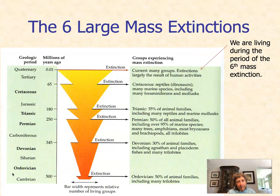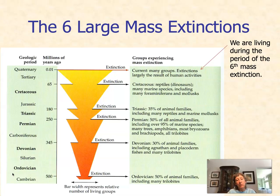This is a table showing five prior mass extinction events. I want you to know from memory the Cretaceous-Tertiary extinction about 65 million years ago and the Permian-Triassic extinction about 225 million years ago. Many people believe we are actually living during the sixth mass extinction, and this differs from all past mass extinctions in that it is human-caused, whereas the five previous ones are associated with asteroids, climate change, or other geological events.